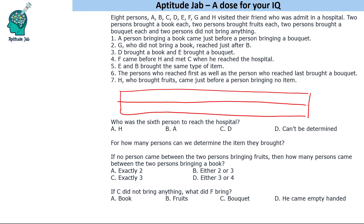We need to determine the order in which they came and the item each brought. The conditions are: a person bringing a book came just before a person bringing a bouquet; G, who did not bring a book, reached just after B; D brought a book; E brought a bouquet; F came before H and met C when he reached the hospital; E and B brought the same type of item. Point six says the person who reached first as well as the person who reached last both brought a bouquet.